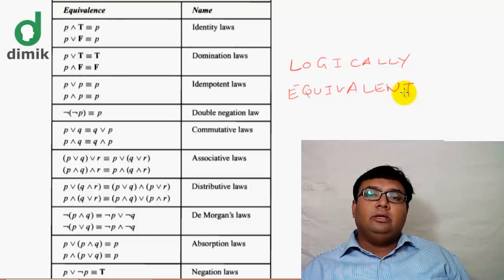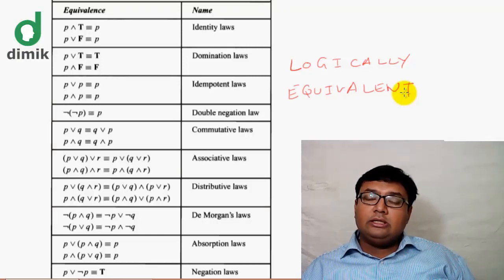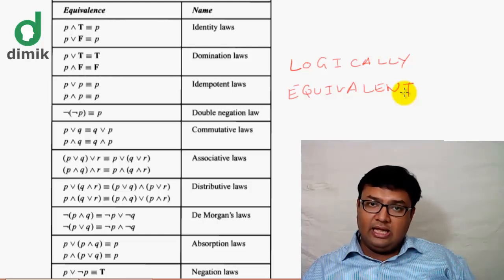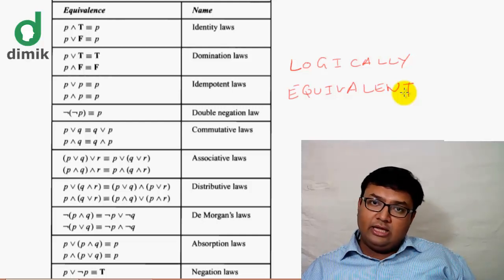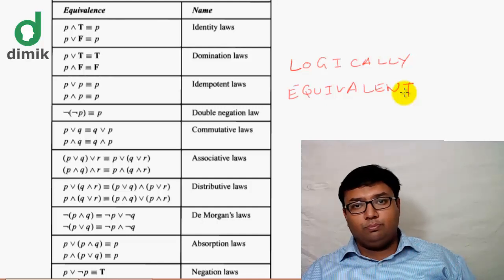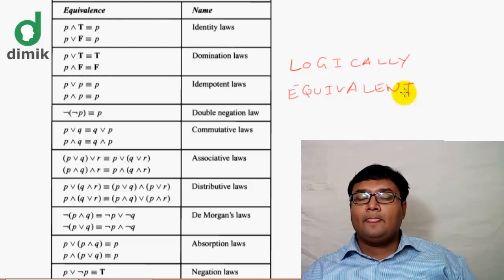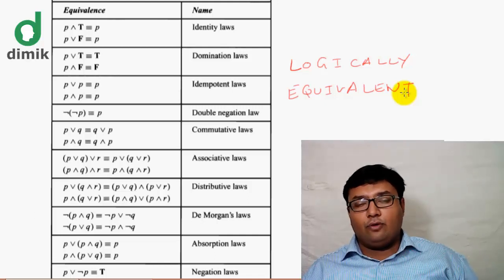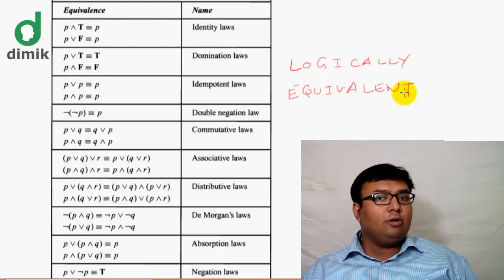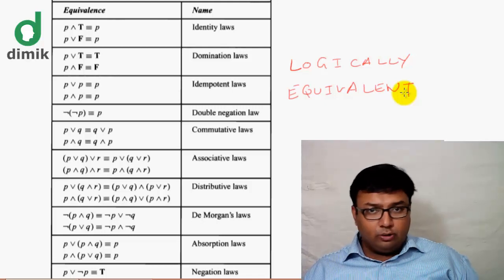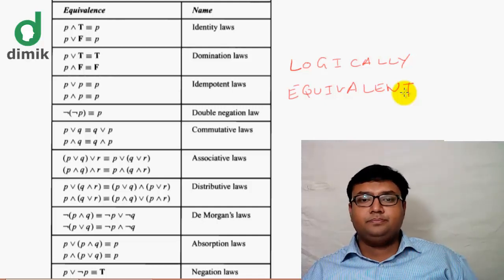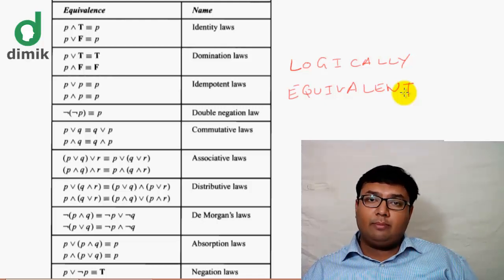Now I am going to introduce logical equivalence. Logical equivalence means that two compound propositions always have the same truth value — when one is true the other is true, and when one is false the other is false. Logical equivalence is very important because it allows us to do a lot of work.